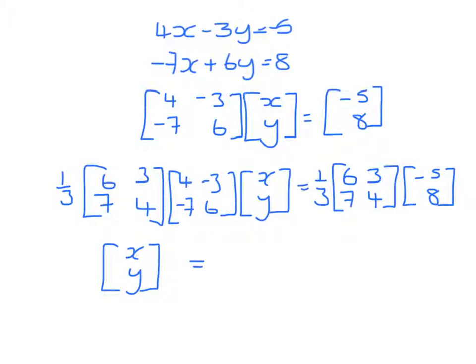So that gives us minus 30 plus 24, which is minus 6, and minus 35 plus 32, which gives us minus 3.